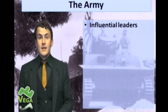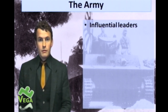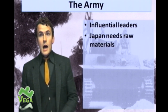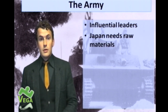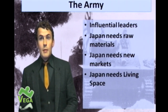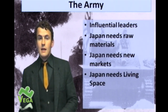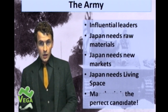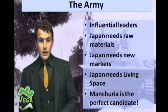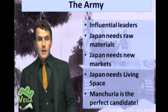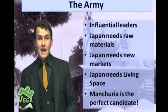At this particular moment in time, because Japan was going through an economic downturn, they needed more raw materials. They also needed new markets for their goods and living space for their growing population. Manchuria, which is in China and just across the sea from Japan, was the perfect candidate.